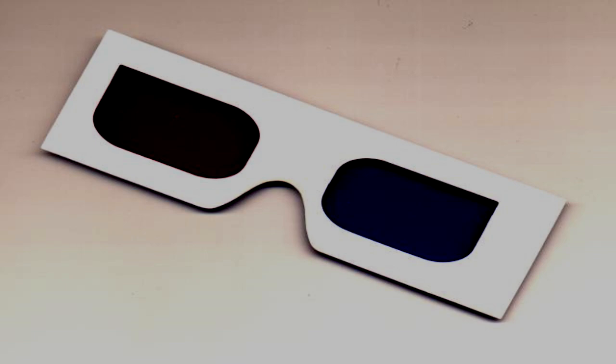SCP-178 is a pair of white stereoscopic glasses with a rectangular white cardboard frame and lenses of transparent blue and red, left and right lenses respectively. The item exhibits no unusual physical properties apart from a slight discoloration of the cardboard consistent with age.